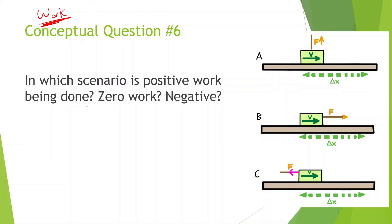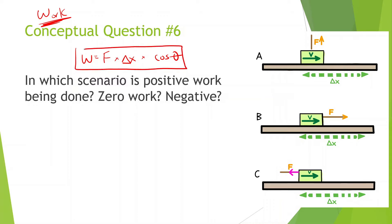In which scenario is positive work being done, zero work, or negative work? What we should know is work is equal to force times displacement times cosine of theta. Work is done when a force is applied and that force is bringing about results in the form of distance.